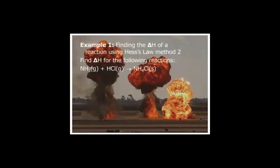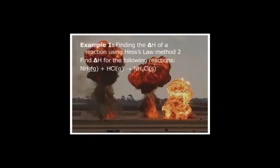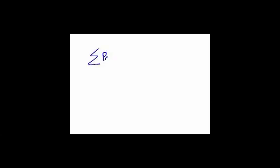Here's a reaction: ammonia plus hydrochloric acid makes ammonium chloride. By the way, the states of matter — they do matter. We're going to look up values on the table, but first we should write down the equation. The main equation is: the sum of the products minus the sum of the reactants equals delta H. That big sigma (Σ) is a mathematical term meaning 'sum.'